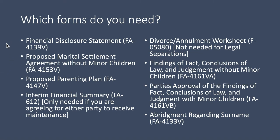You'll need a financial disclosure statement — I've listed the form numbers so that if you need to find these forms, you can hunt them down. You can find them at the local law library, on our website at www.milwaukeejusticecenter.org, or on the WICourts forms site. Next, you'll want the proposed marital settlement agreement without minor children. You do need the proposed version — there is a marital settlement agreement without minor children, but that's not the right form. You need the proposed one, so be careful because they look really similar.